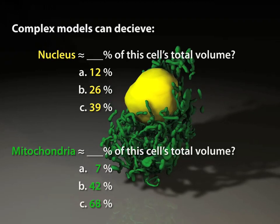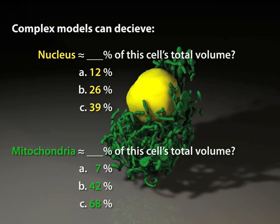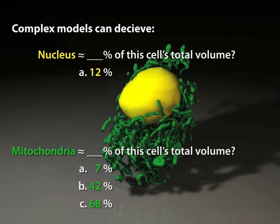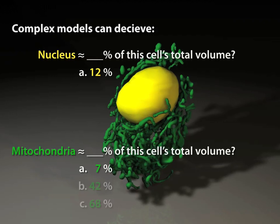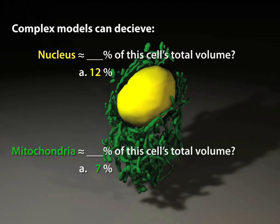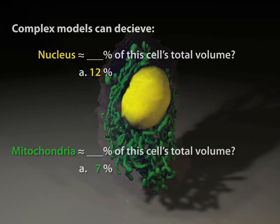Believe it or not, the correct answers are closest to 12% for the nucleus and only 7% for the mitochondria, much lower than most people infer by glancing directly at these representations of the data.